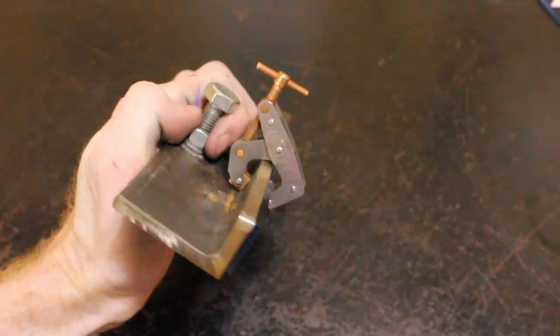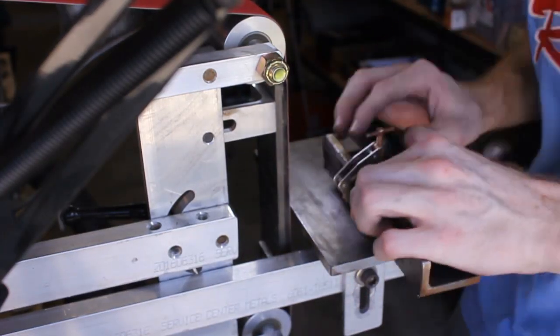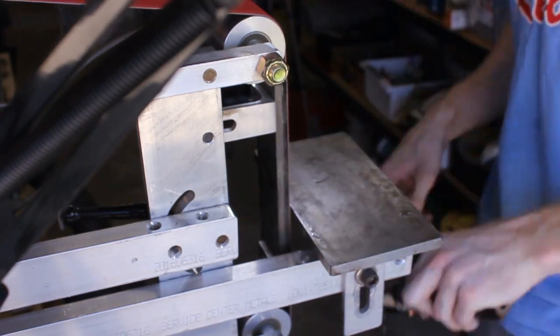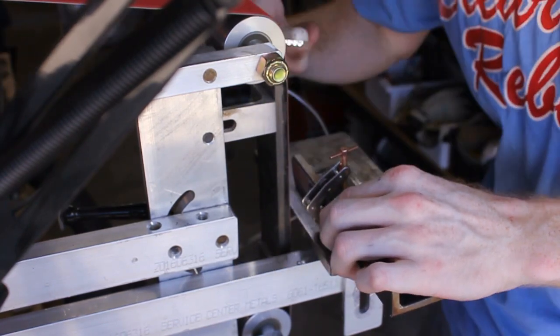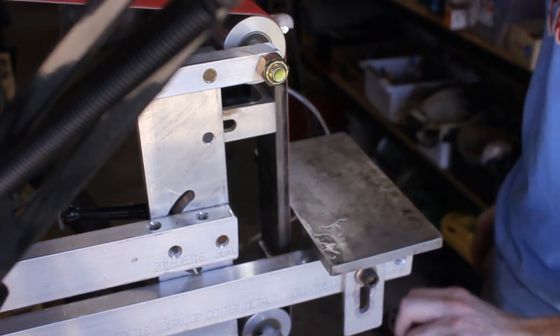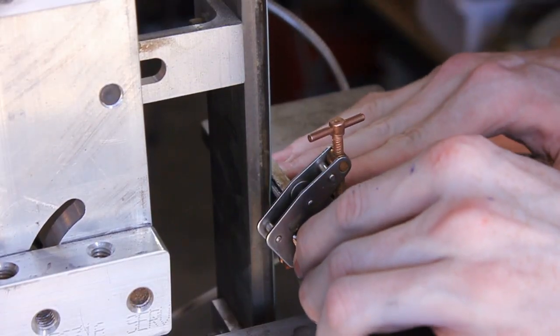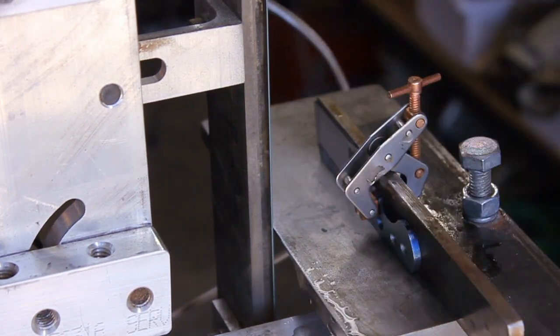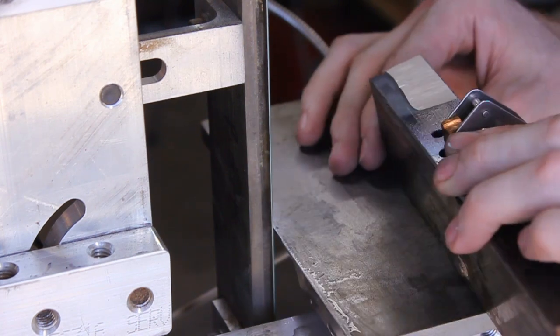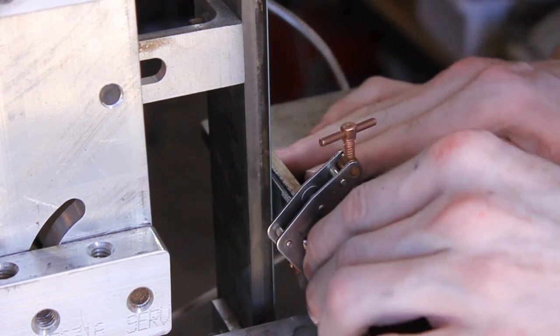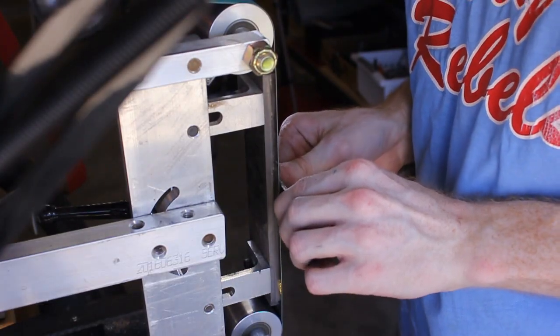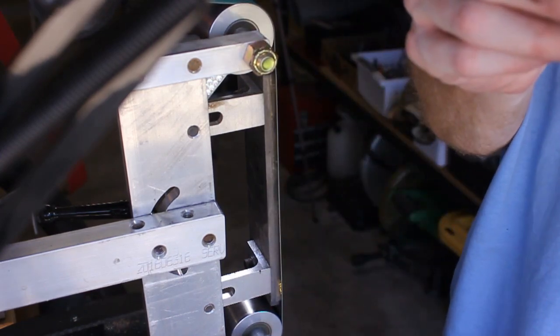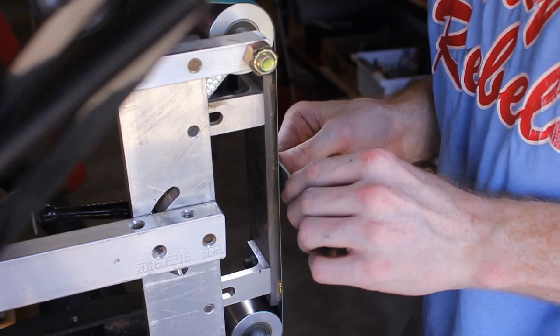Then we centerline scribed the edge with the centerline scribe we built in the last video. That allows us to grind to a centered edge, which is essential on a custom handmade knife. I also scribed in the bevel lines to give us an upper spot to grind to.